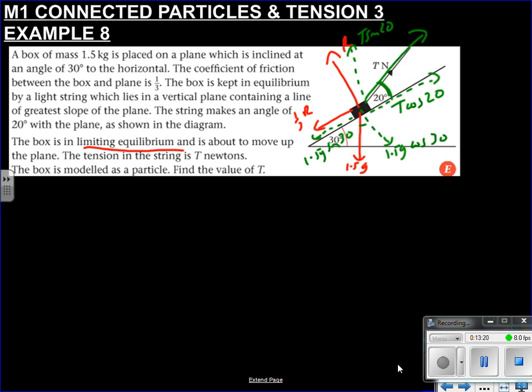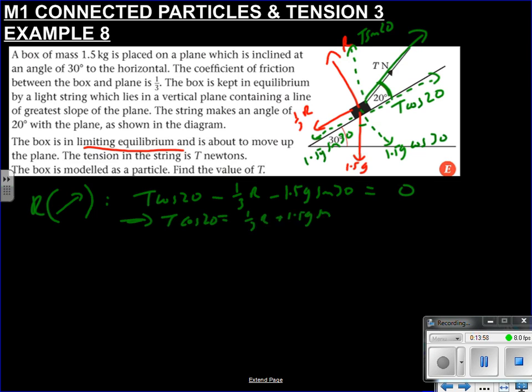And now we can do this, can't we? Because it's on the point of moving up. Everything's all good. So I need to find T. So all we can do is start by perhaps resolving up the slope. So all the forces going up the slope. T cos 20. That's cool. What's opposing it? So a third R. Don't know what R is yet. And 1.5g sin 30. It's in equilibrium, so this equals zero. So if we rearrange, we get T cos 20 is a third R plus 1.5g sin 30. And therefore T is a third R plus 1.5g sin 30 over cos 20.